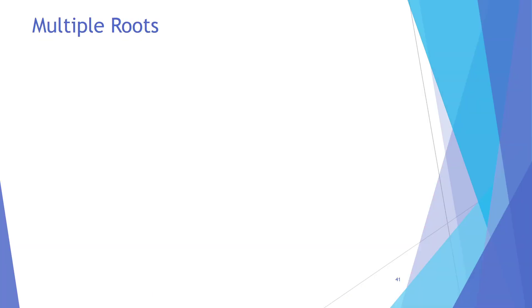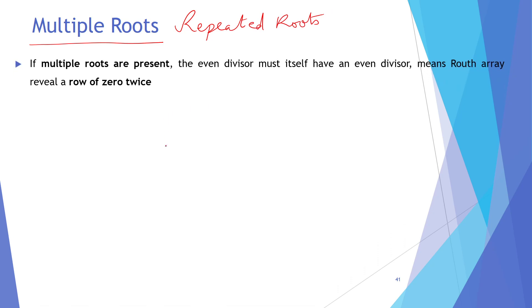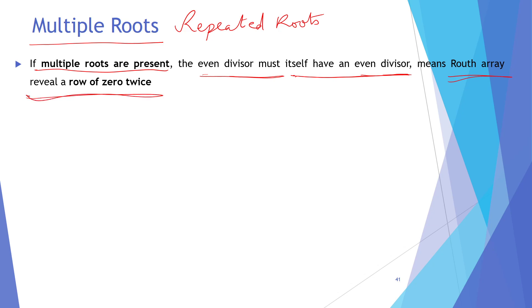In Routh-Hurwitz testing, the next case is for multiple roots — also called repeated roots. If multiple roots exist within any polynomial, then the even divisor polynomial itself has another even divisor polynomial that divides it with zero remainder. This means the root array will reveal a row of zeros twice.